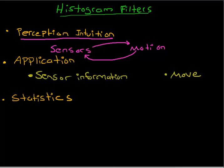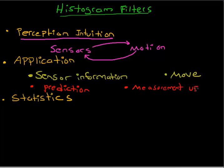Histogram filters work in two steps. The first step is the prediction step, and the second step is known as the measurement update. The measurement update corresponds to the sensor information, and the prediction corresponds to movement. Predictions code for movements, and measurement updates code for sensor information.